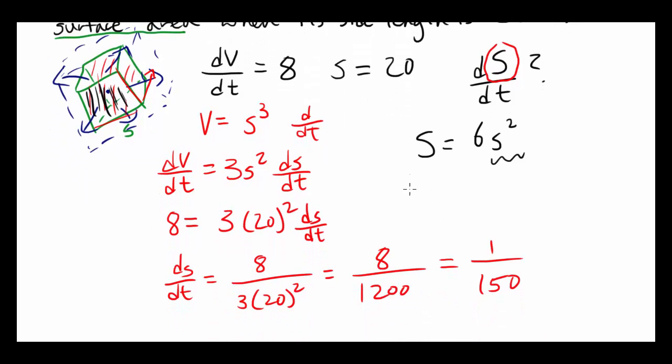So let's try differentiating with respect to time again. d(SA)/dt is 12S, and you have to put dS/dt. And we know what dS/dt is. We know what side length is.